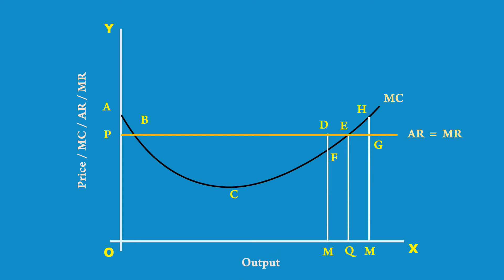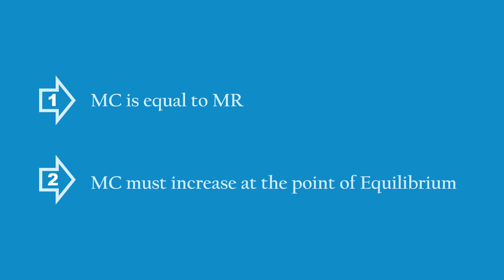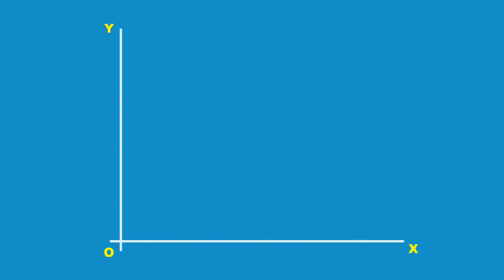A producer under perfect competition is in equilibrium when the following two conditions are satisfied. 1. Marginal cost is equal to marginal revenue. 2. Marginal cost must increase at the point of equilibrium.